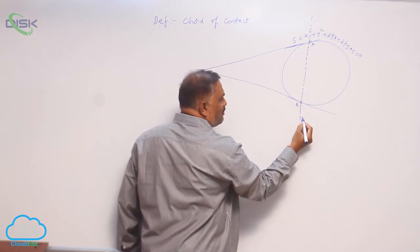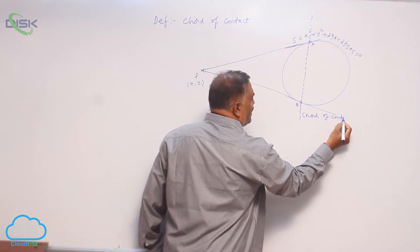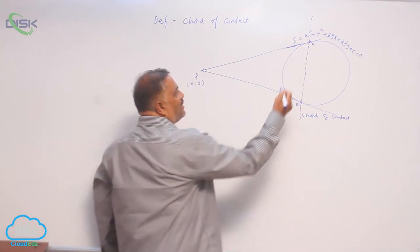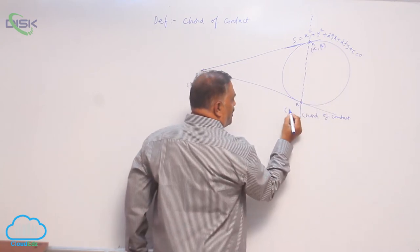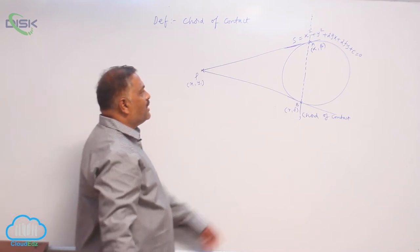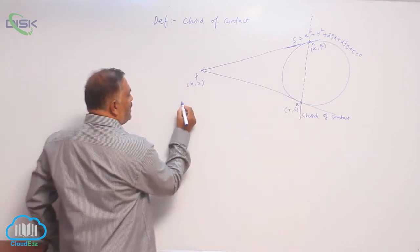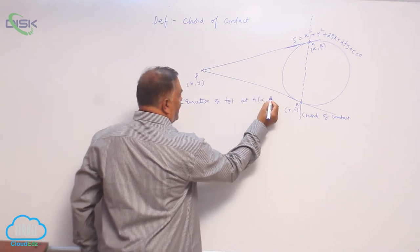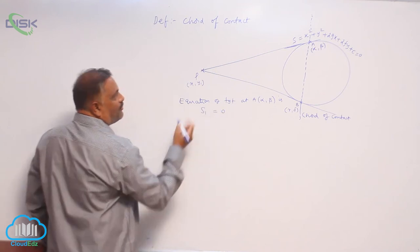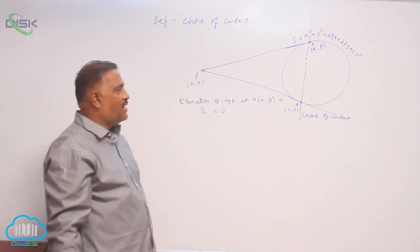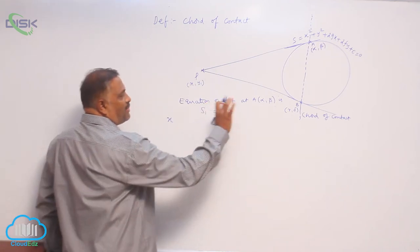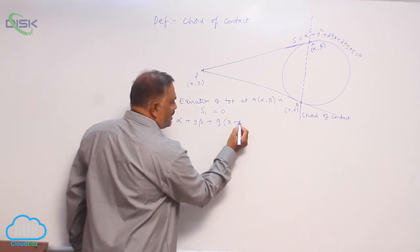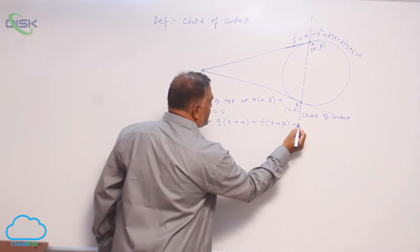This is point A and this is point B. This is called the chord of contact of point P(x1, y1) with respect to the circle S equal to 0. Assume A is (α, β) and B is (γ, δ). Both points are on the circle. The equation of the tangent at A(α, β) is S1 equal to 0, written as: x·α plus y·β plus g·(x plus α) plus f·(y plus β) plus C is equal to 0.